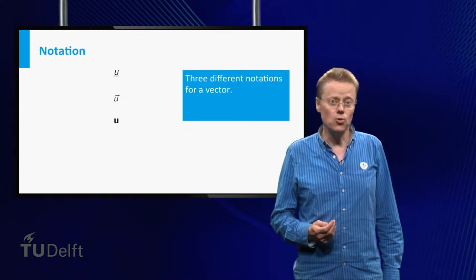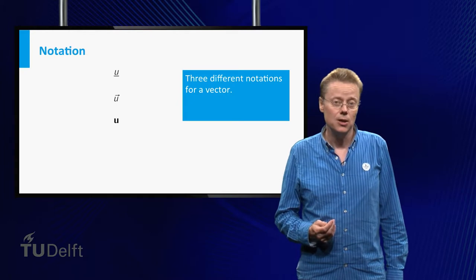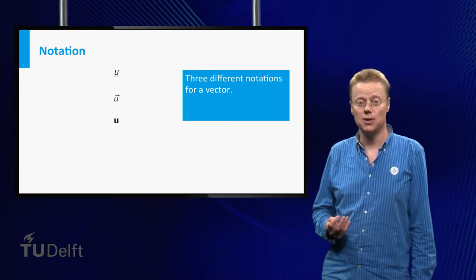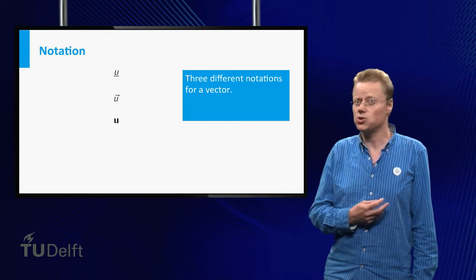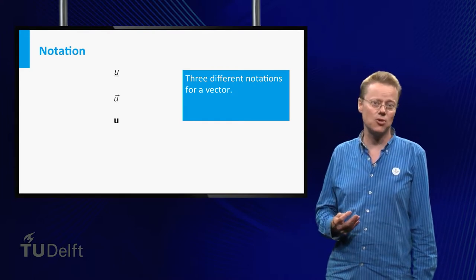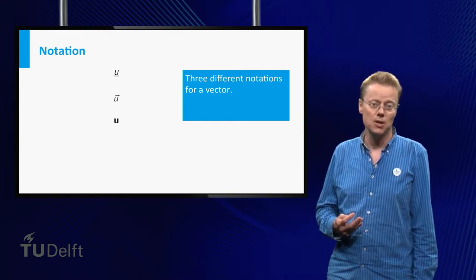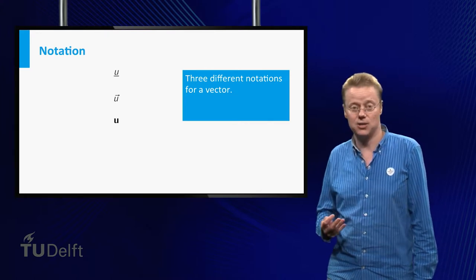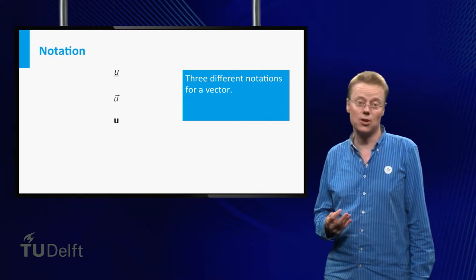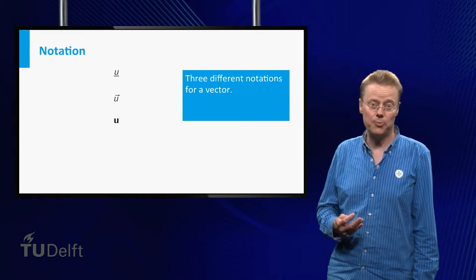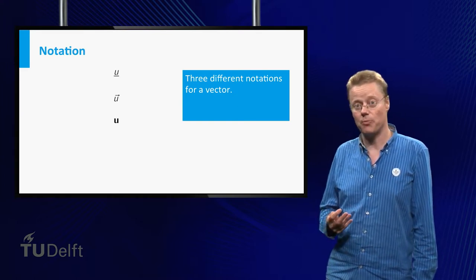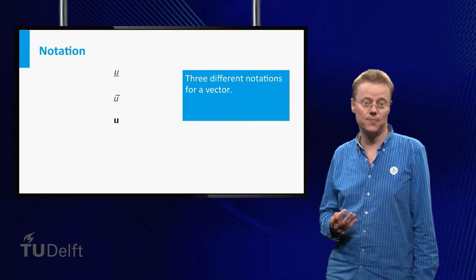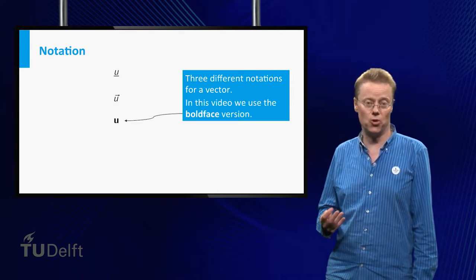When we look at a vector u or v, we have to stress that we mean vectors rather than numbers. Unfortunately, there is not just one universally accepted notation to do this. Often the u is underlined to stress that it is a vector and not a number. Other people use u with a little arrow on top, and other people use boldface. In this video we use boldface notation.